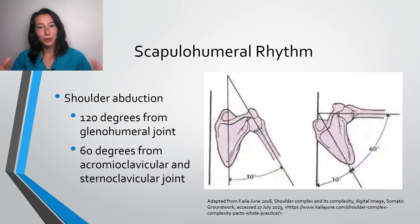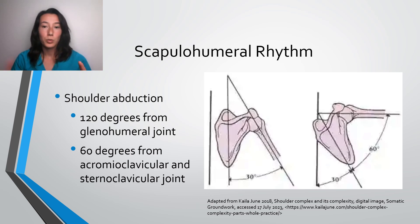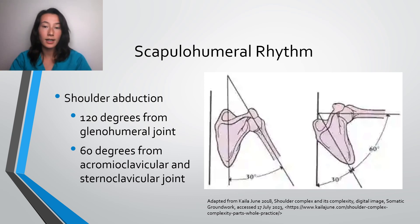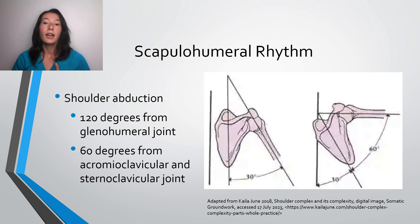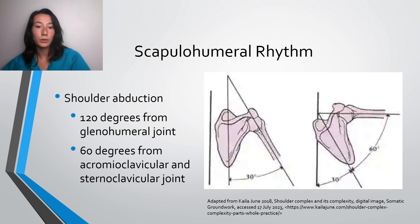Now onto the actual biomechanics. We know that normal shoulder abduction range of motion is 180 degrees. Out of this 180, 120 degrees comes from the glenohumeral joint. The remainder — the 60 degrees remaining to get to that 180 — comes from the combination of movement from the AC joint and the SC joint, the acromioclavicular and sternoclavicular joints. These remaining 60 degrees require elevation from the SC joint and upward rotation of the AC joint. The glenohumeral joint is what initiates abduction up until it reaches 30 degrees.